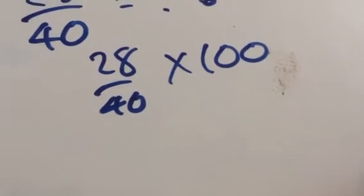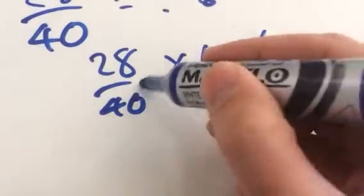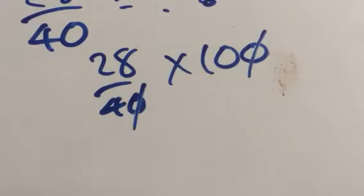You have to cancel the zero from 40 and 100, because they've both got multiplied by 10. So I can cancel one factor of 10 there.